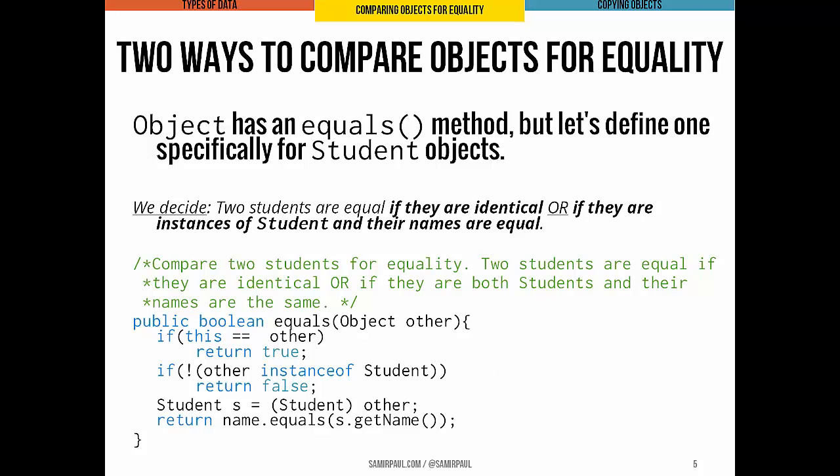If we've determined that other is in fact a student object and they're not the same actual object in memory, we cast other to a Student, point a student variable s at it, and then return whether or not their names are equal. We could have said two students are the same if both their names and test scores were the same — that could have been a decision we made, but we chose not to. This depends to a great extent upon our design decisions.